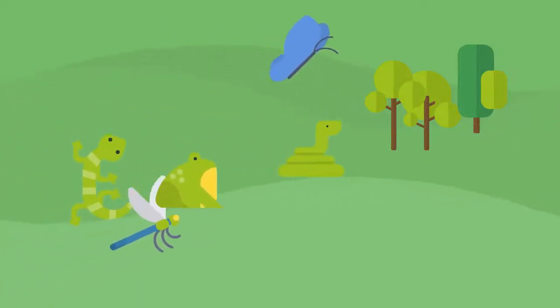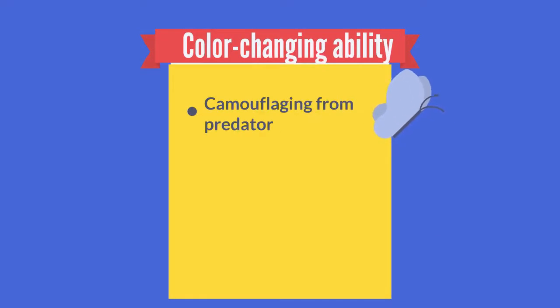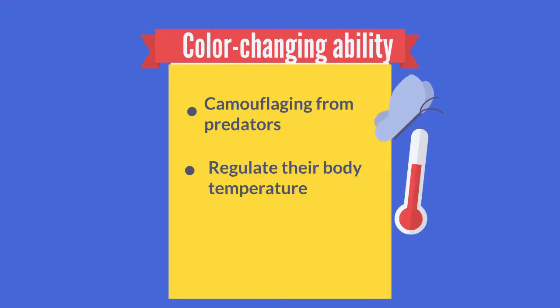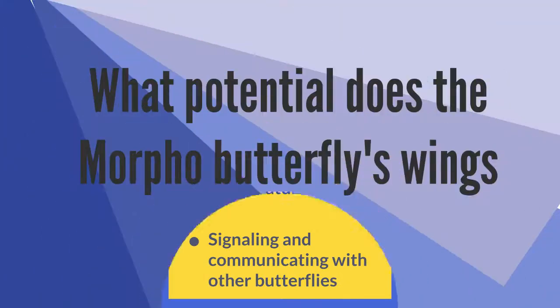This ability to change color quickly makes it hard for predators to catch them. They rely on manipulating light and color not only for camouflaging, but also to regulate their body temperature and even for signaling and communicating with other butterflies in the distance.